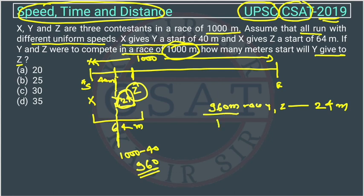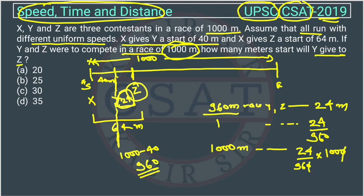In 1 meter race, how much start will Y give to Z? 24 upon 960. Therefore, in a 1000 meter race, how much start will Y give to Z will be equal to this much. This 0 will cancel this 0. 24 into 96, this 4 will cut this 100, it will go 25. So this is 25 meters. In a 1000 meter race, Y will give Z a start of 25 meters.